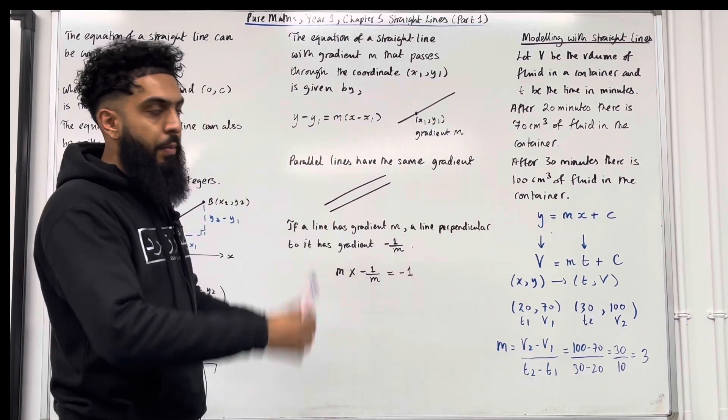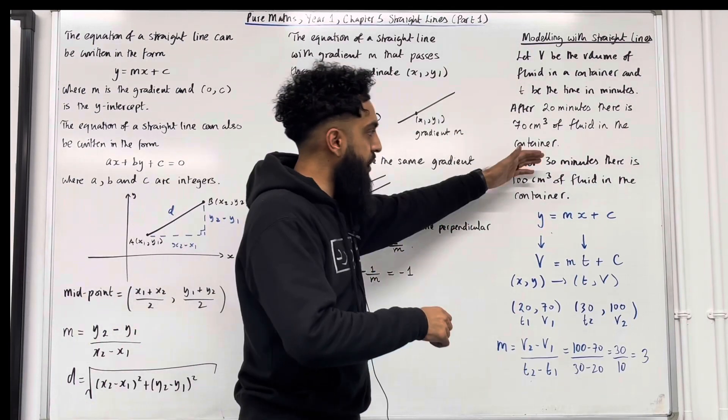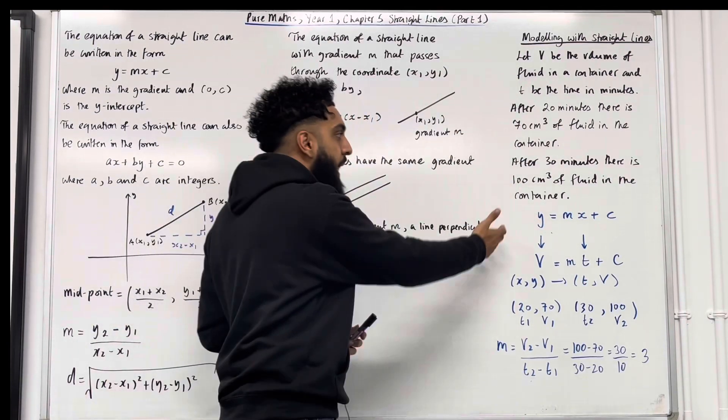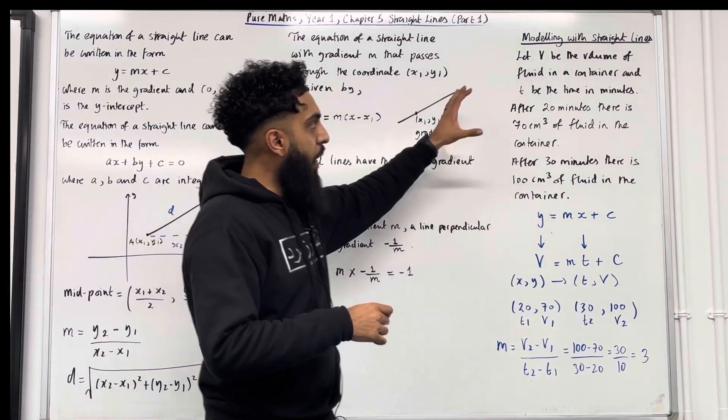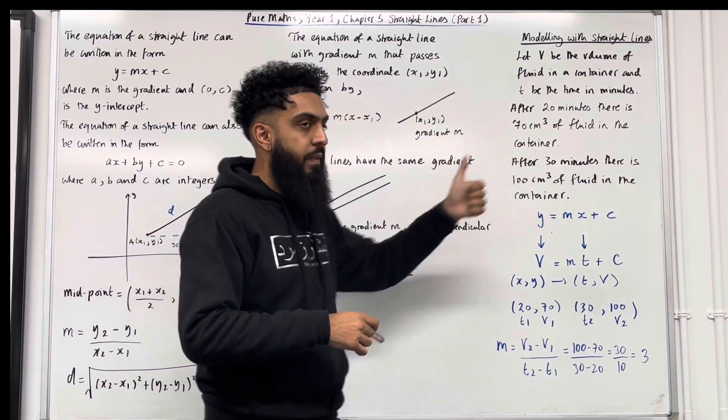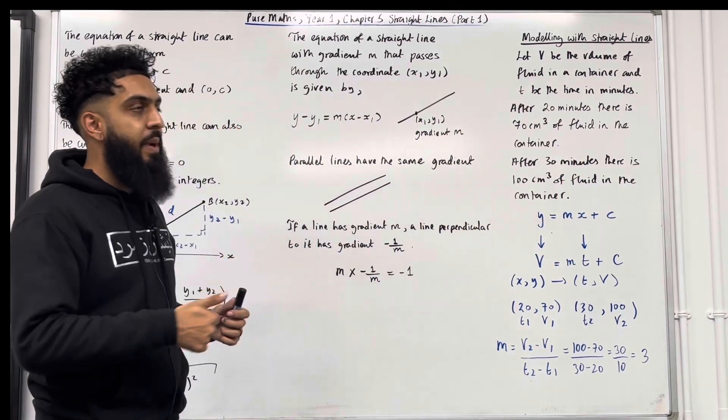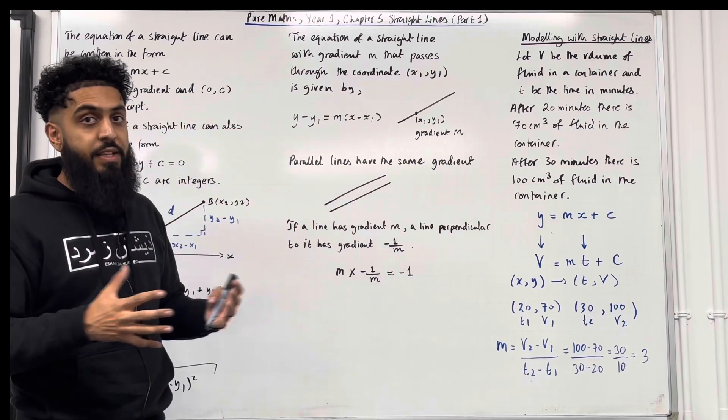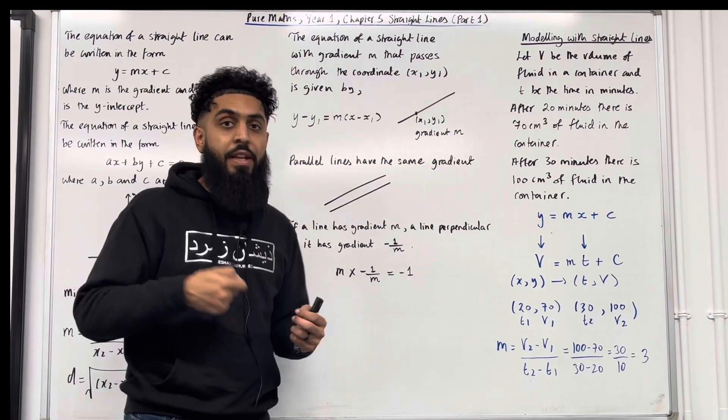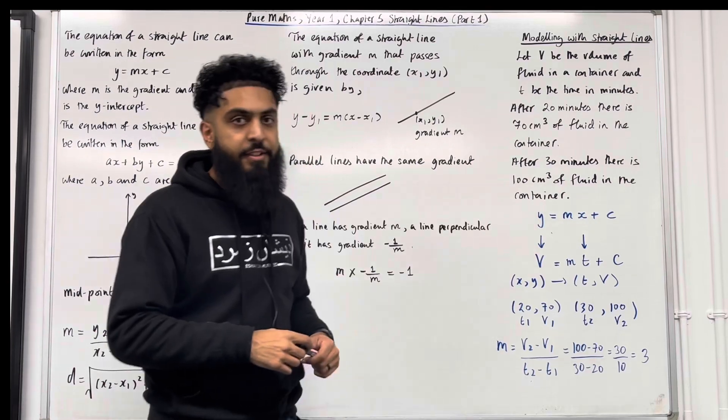Okay, so this is a modelling scenario. Now we can use a straight line to model this situation. Consider y equals mx plus c. Now over here, we've got two variables. We've got the volume and we've got the time. We need to decide which one is the independent variable and which one is the dependent variable. Well, the independent variable is time and the dependent variable is the volume. Consider y equals mx plus c.